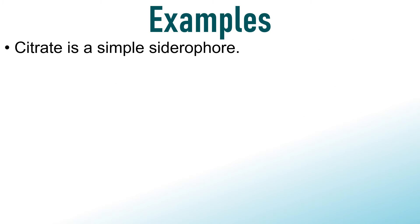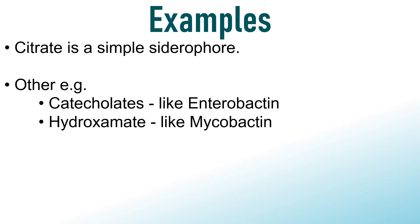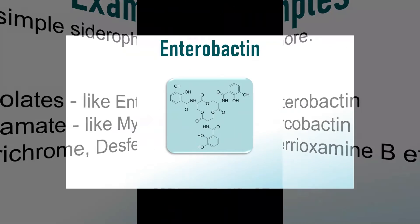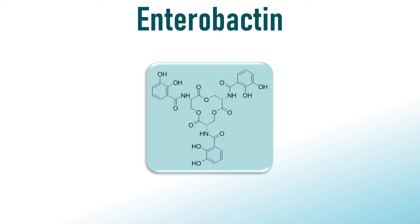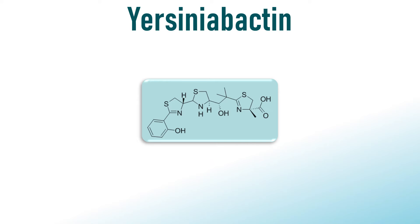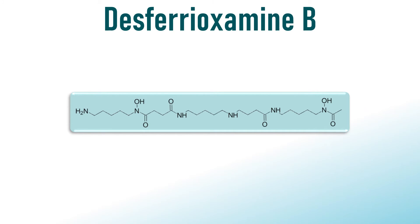Now let us go through a few examples. Citrate ion is a simple Siderophore. Other examples involve catecholates like enterobactin, hydroxamates like mycobactin, desferrochrome, desferrioxamine B, and others. This is enterobactin, a siderophore secreted by E. coli. This is etsinobactin, another siderophore, and this is desferrioxamine B.